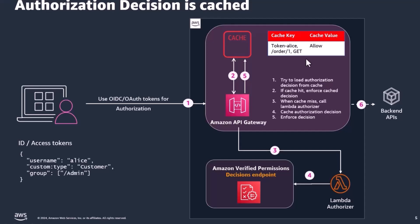What we cache is the token for the user, the HTTP path, as well as the HTTP method. In this example, what we have cached is Alice's token, the HTTP path — which is slash order slash one — and the HTTP method GET. What we have cached this against is the authorization decision, which was an allow.